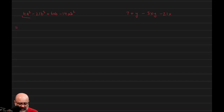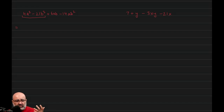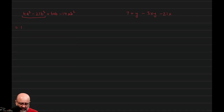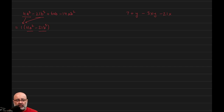So what is the GCF of these two terms? The smallest number is 4, but 4 doesn't go into 21. The next highest factor is 2. 2 doesn't go into 21 either. Then 1. So as far as the numbers go, all I can do is factor out a 1. And between the variables, one has an a, the other has a b, so no variables in common. So it's just going to be 1 times 4a² minus 21b³. Dividing by 1 just leaves those terms unchanged.